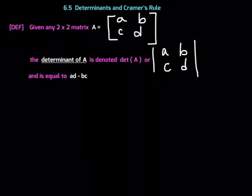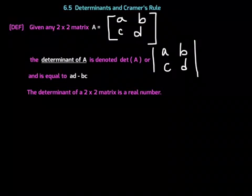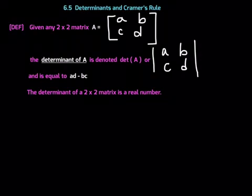The determinant of a two-by-two matrix is a real number. So when you find the determinant of a two-by-two matrix, you're basically finding a number — a number that is associated with that matrix.